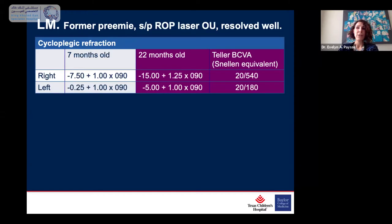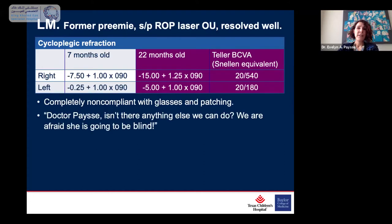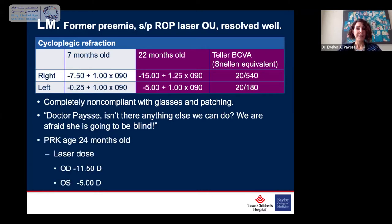Her vision by teller acuity is poor with glasses, but she never wants to wear her glasses at all. We kept trying to have her wear the glasses and asking her mother to patch the left eye. After all of this time, her mother was getting desperate and said, 'Dr. Pacey, isn't there anything else we can do? We are afraid she's going to be blind. She won't wear the glasses. She won't patch.' So we did PRK on her eyes at 24 months of age.